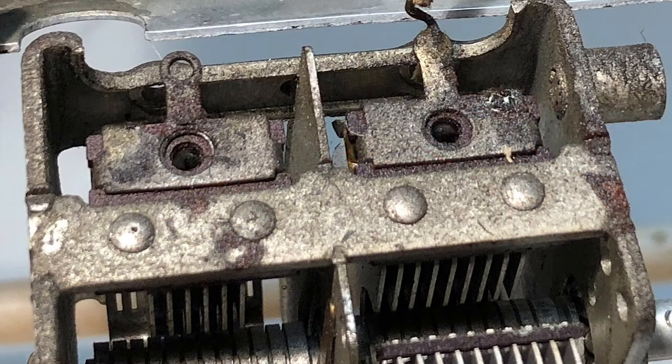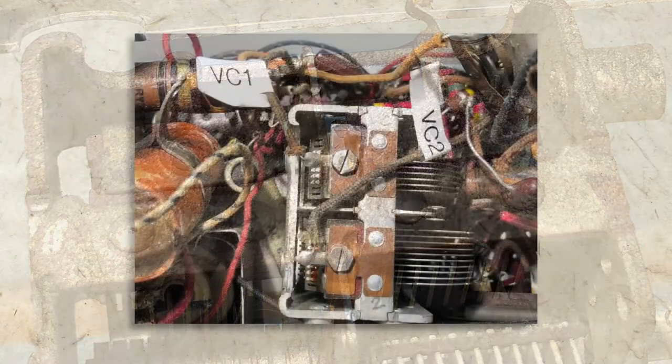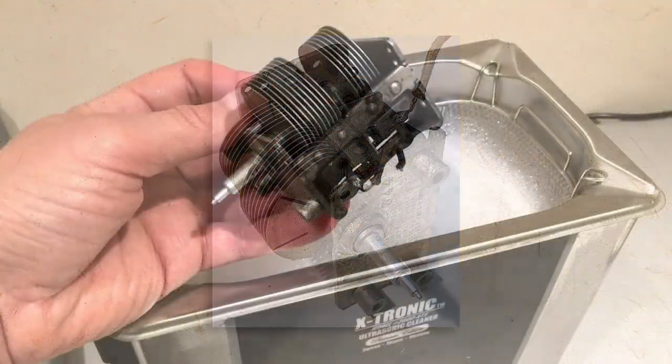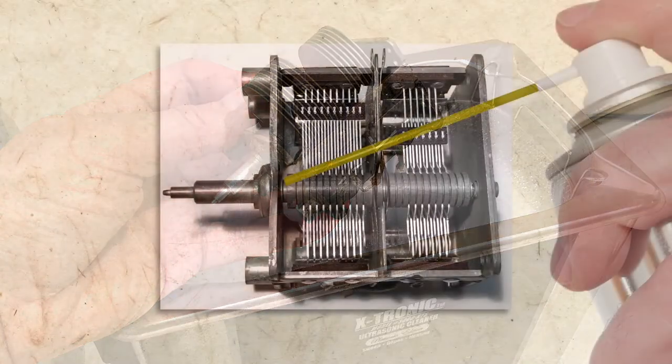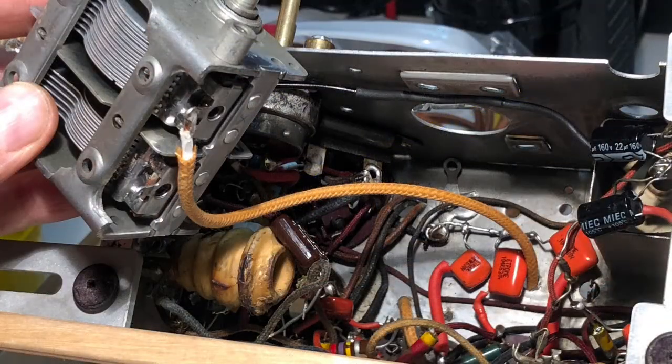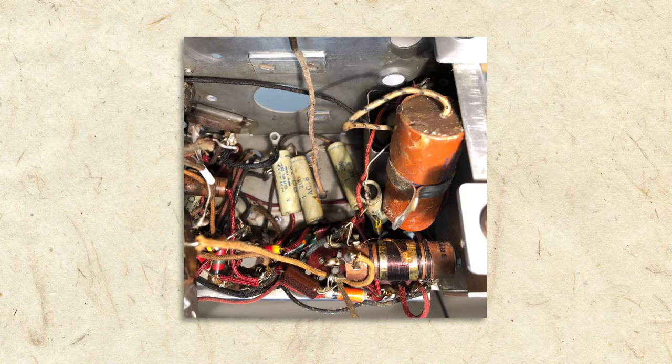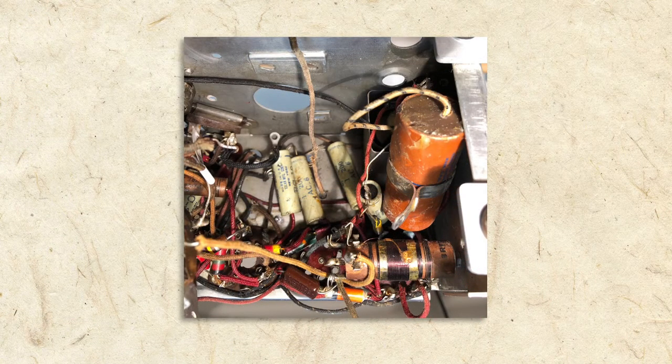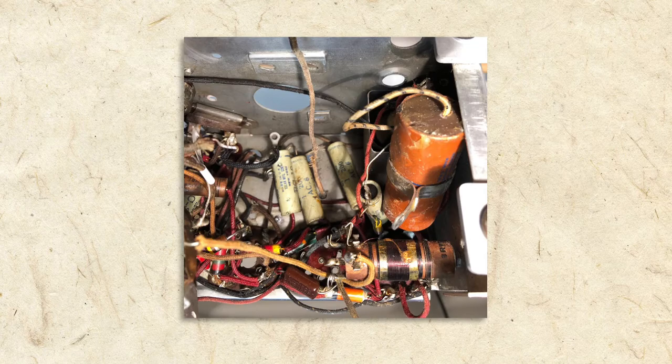The variable condenser in our radio tested fine for shorts, but like everything in the radio, it was filthy. After carefully marking the leads, I removed it from the chassis, gave it an ultrasonic bath, lubricated the shaft, and replaced the frayed wiring. Having the variable condenser out of the chassis also gave me access to many capacitors that needed replacement.